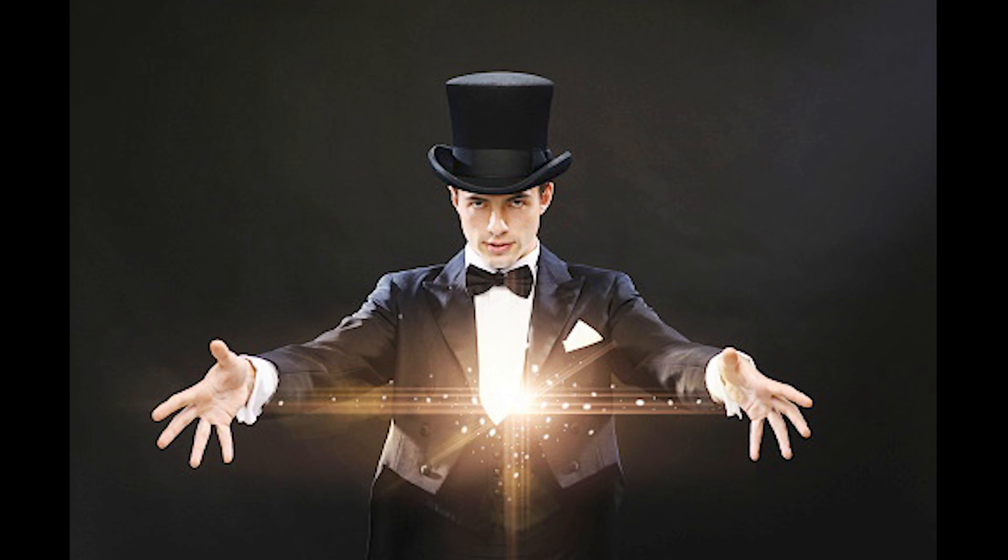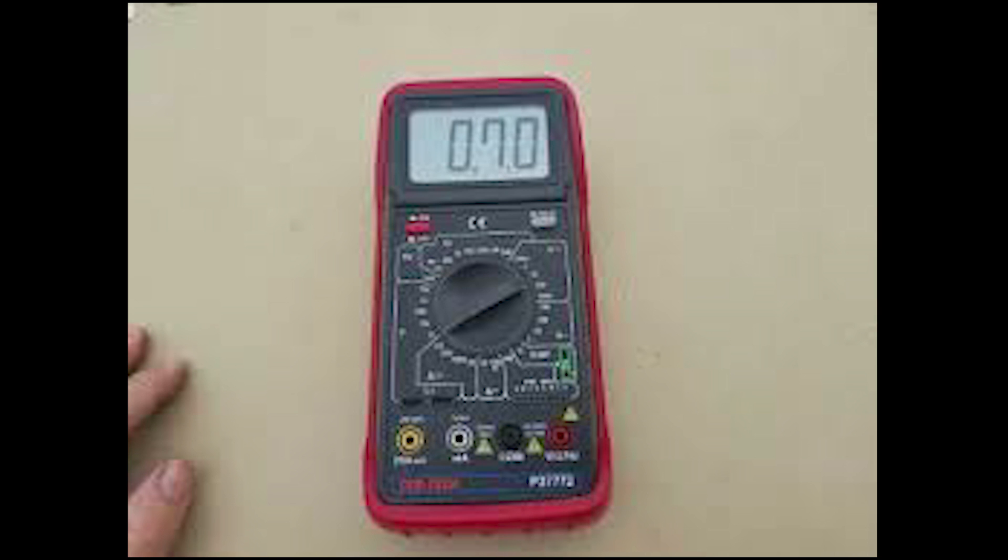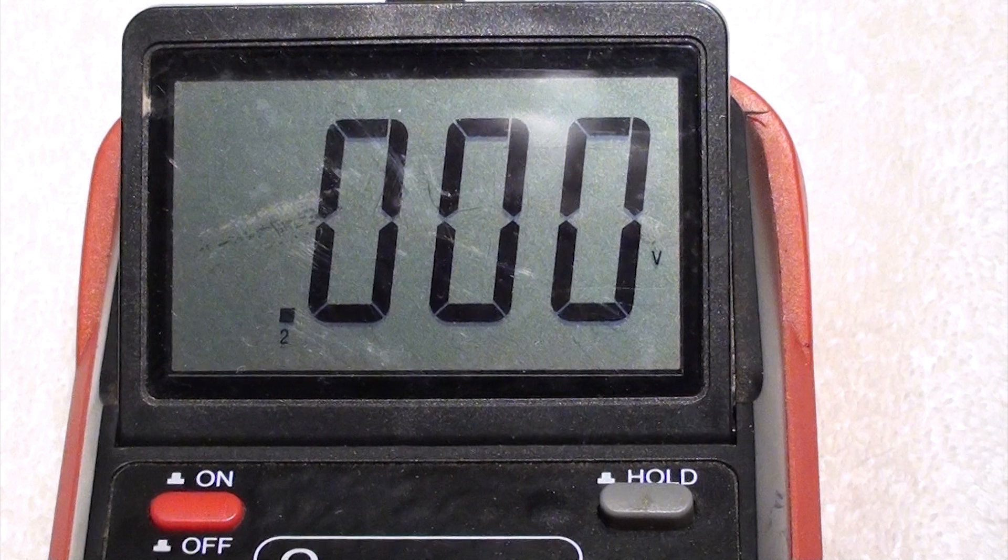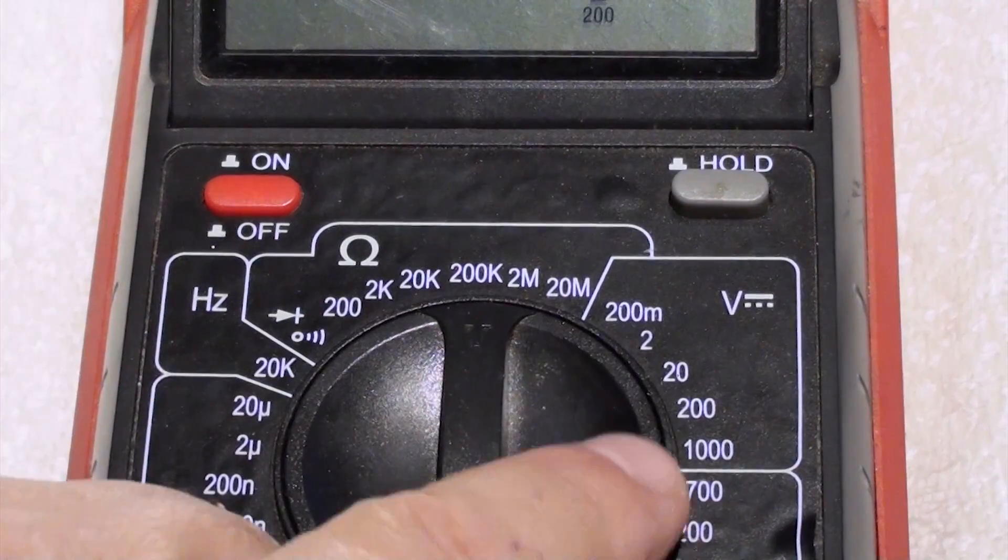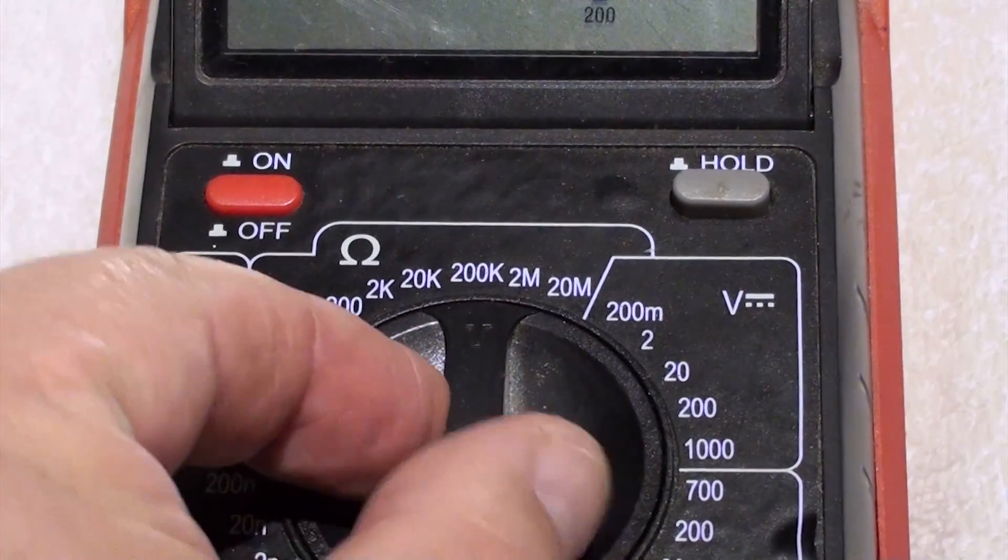Watch this. The first thing you want to do is get your multimeter out and determine which battery is the dead battery. Now if the battery is completely dead you're not going to get a reading. Put the multimeter on the two volt area here.